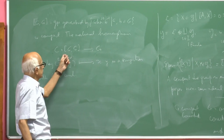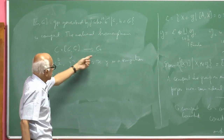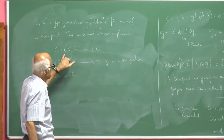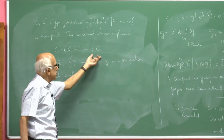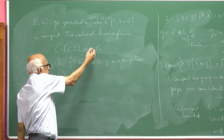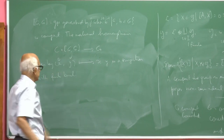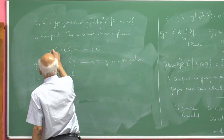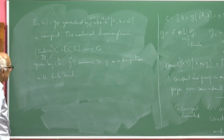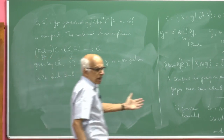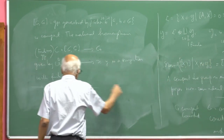Since G is compact and C and [G, G] are both compact, and this product map has the identity as its tangent map — which is easy to check — the tangent map is an isomorphism. Therefore locally there is an open set mapping onto an open set in G, and since G is generated by any open set containing the identity, the mapping is surjective. The tangent map is injective, so it is a covering, and the kernel is a finite group.